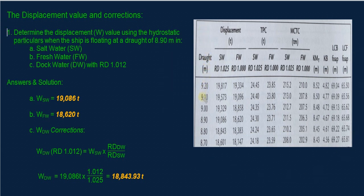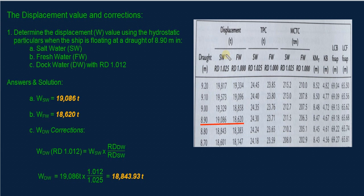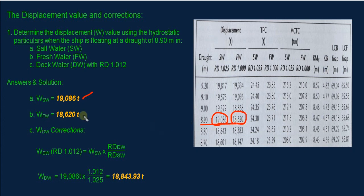Going back to the hydrostatic table: the first column is the ship's draft — the vertical distance from the waterline to the keel. The second column is the ship's displacement in salt water, and the third column is displacement in fresh water. At a draft of 8.90 meters, the displacement in salt water is 19,086 tons — that is our answer for part A. For part B, the displacement in fresh water at 8.90 meters draft is 18,620 tons.